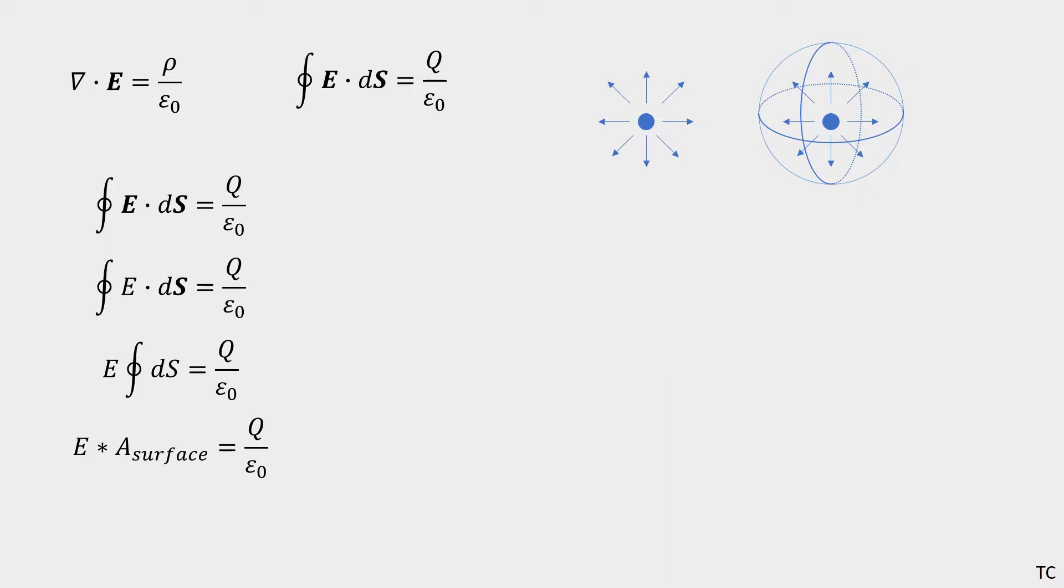This allows E to be pulled out as a scalar. Since the surface area of a sphere is 4πr², you get the familiar result that the electric field of a point charge is E = (1/4πε₀)(Q/r²)n̂, where Q is the charge, r is the distance from it, and n̂ is the normal unit vector denoting that the electric field points outward.